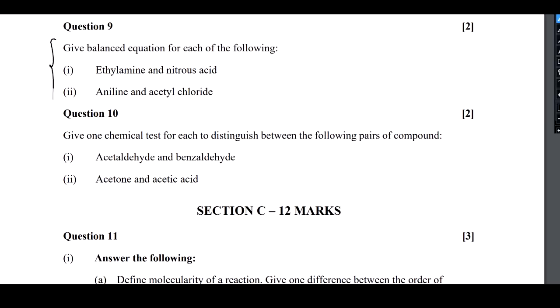Question number 9 is from organic chemistry. It says write a balanced equation for each of the following. We have ethylamine, CH3CH2NH2, reacting with nitrous acid HNO2. From HNO2, if OH goes out, we get NO positive. This is the electrophile. Ethylamine's nitrogen with lone pair is the nucleophilic center. After reaction, it will ultimately give us ethyl diazonium salt, N2 positive.